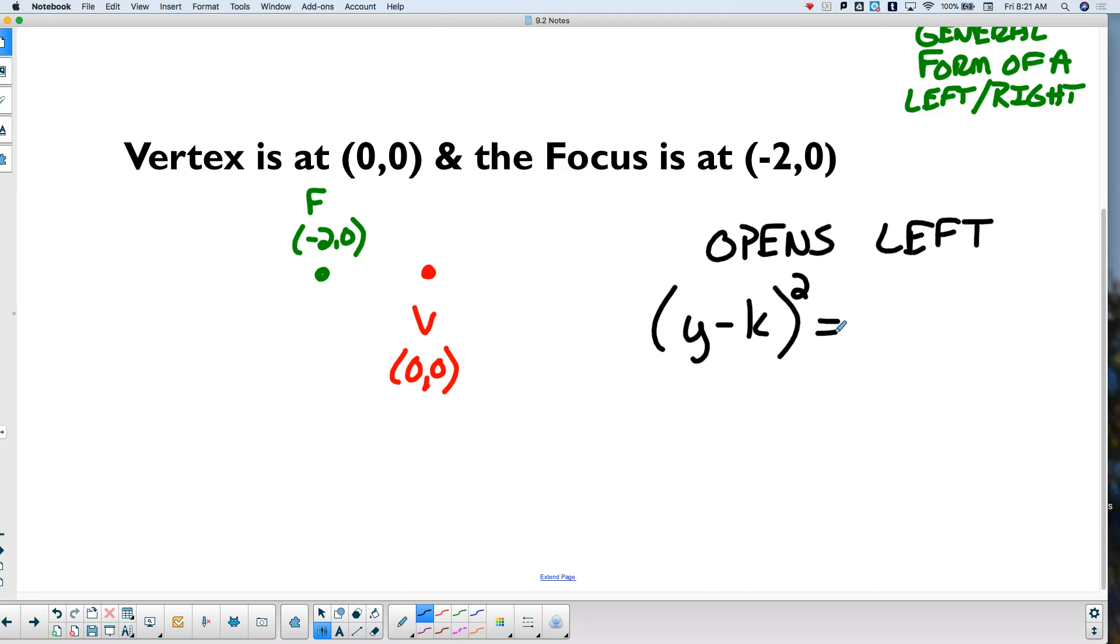So because it opens to the left, that is a y minus k quantity squared equals positive or negative 4p. Left is which direction? The negative direction, so it's going to be negative 4p times the quantity x minus h. And h and k. Where do I find h and where do I find k? The h is which part of the vertex? The x part of the vertex. So this is h. This is k. So right off the start, I'm at y minus 0, quantity squared, equals negative 4. I've got to figure out what p is yet. x minus 0.